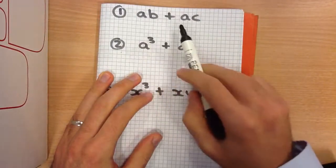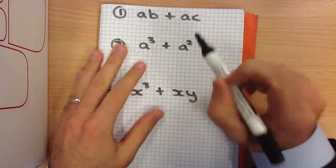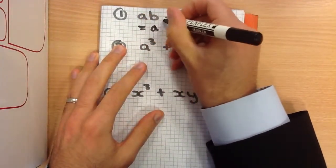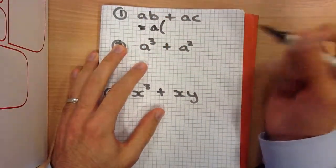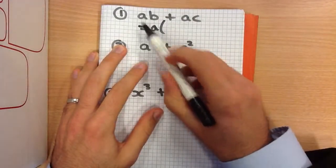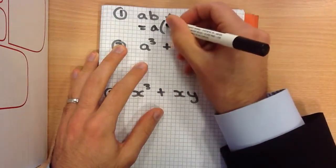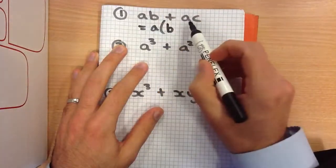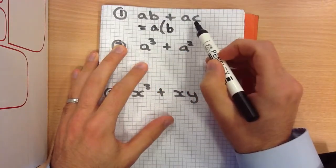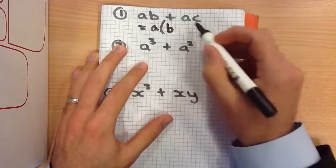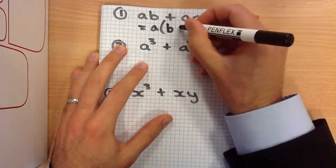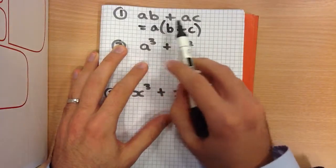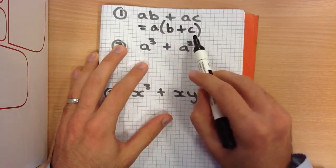What goes into AB and AC? Well, the common factor there is A. It's in both bits, so that's what comes outside our bracket. Then you think to yourself, what do I have to multiply A by to get AB? The answer there is B. And what do I have to multiply A by to get AC? Well, that's C. So the factorised version of AB plus AC is A brackets B plus C.